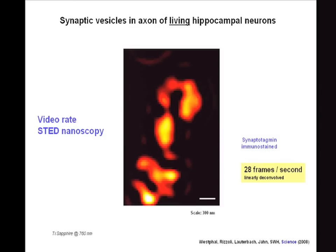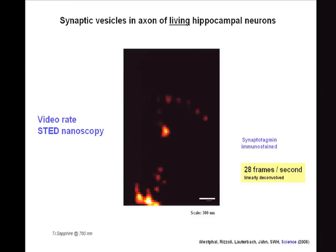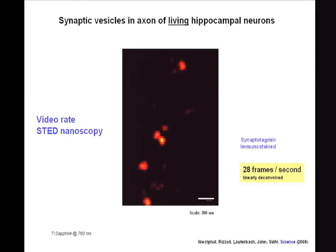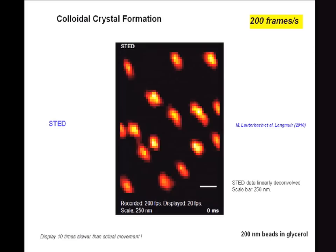This is an application in the life sciences — we applied this video rate STED nanoscopy to discerning the movement of individual synaptic vesicles in a living neuron. This is a confocal snapshot — the confocal microscope is not able to discern individual vesicles and clearly not their movements. But recording a movie with STED, we can see the movement of individual synaptic vesicles quite clearly. This is not Brownian motion — this is a clear physiologically relevant movement, and one can learn something about how the neuron transports vesicles to communicate with another neuron. This is recorded at 28 frames per second.